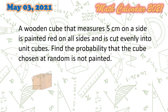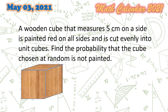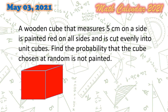A wooden cube that measures 5 centimeters on a side is painted red on all sides and is cut evenly into unit cubes. Find the probability that the cube chosen at random is not painted.